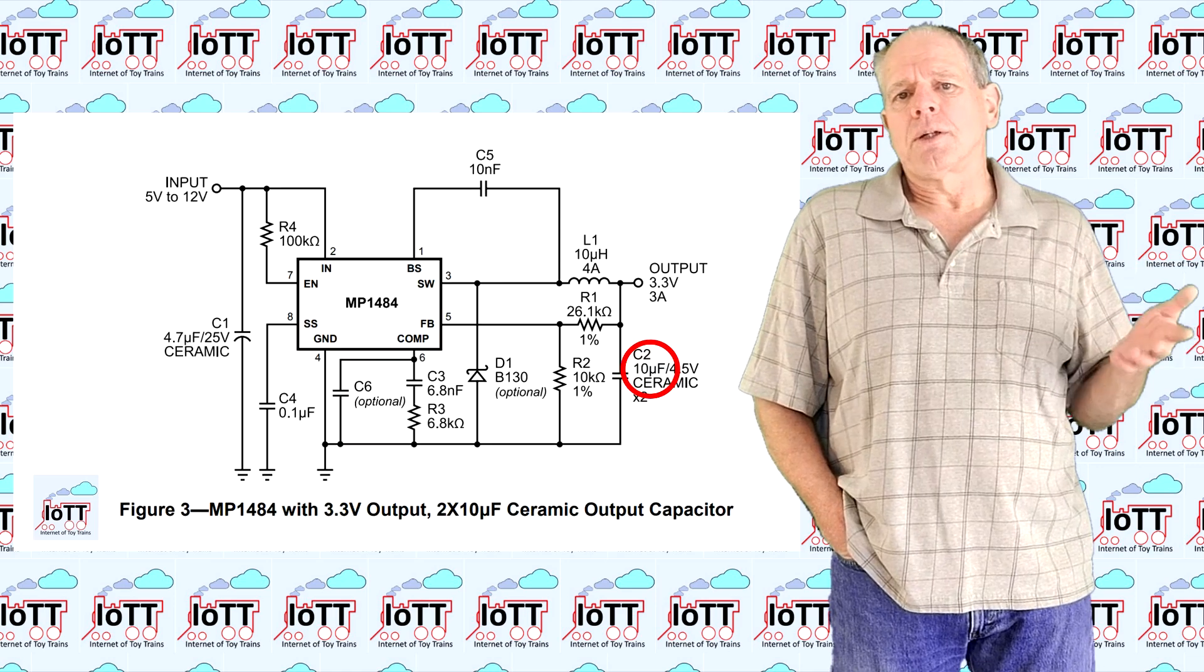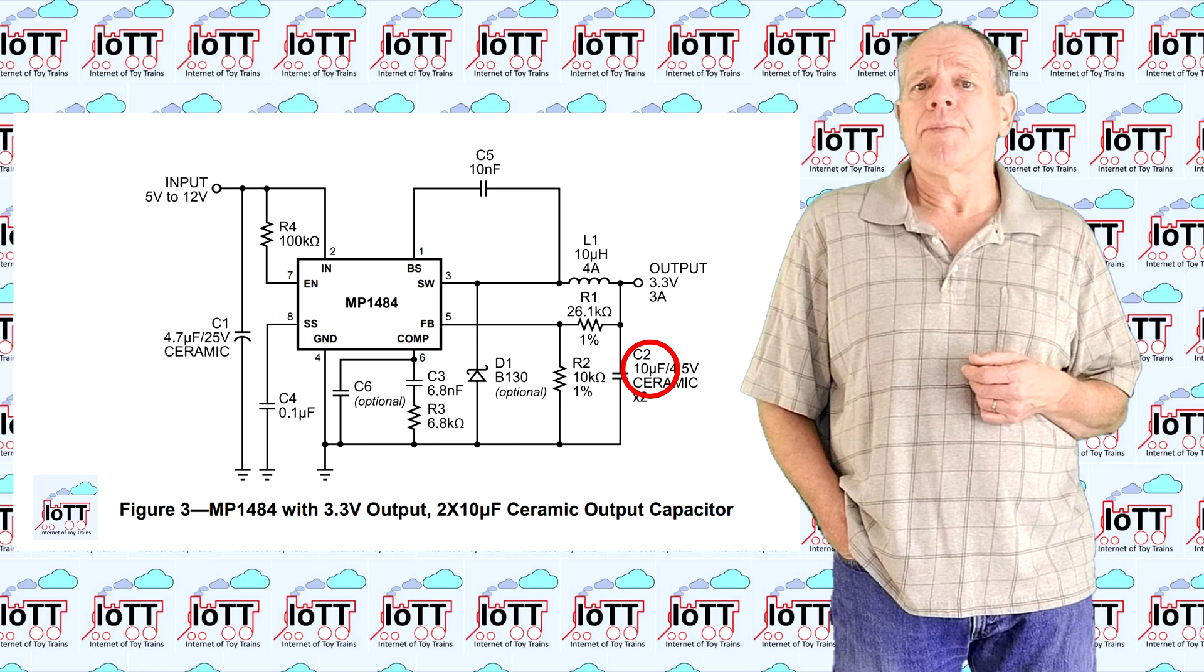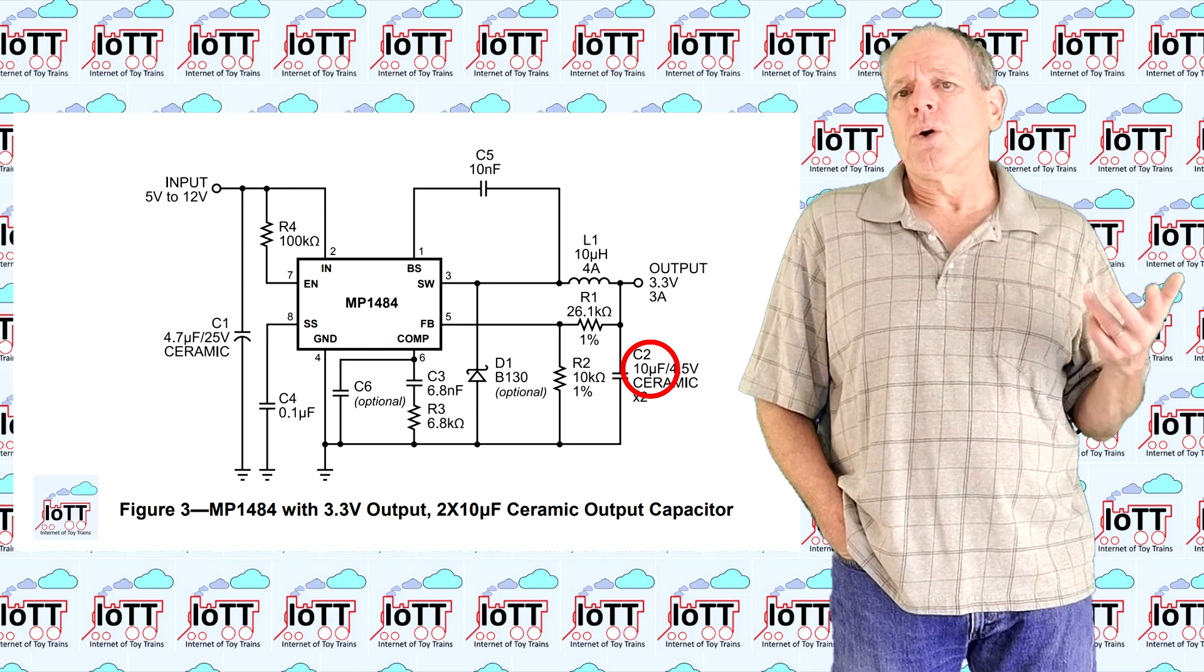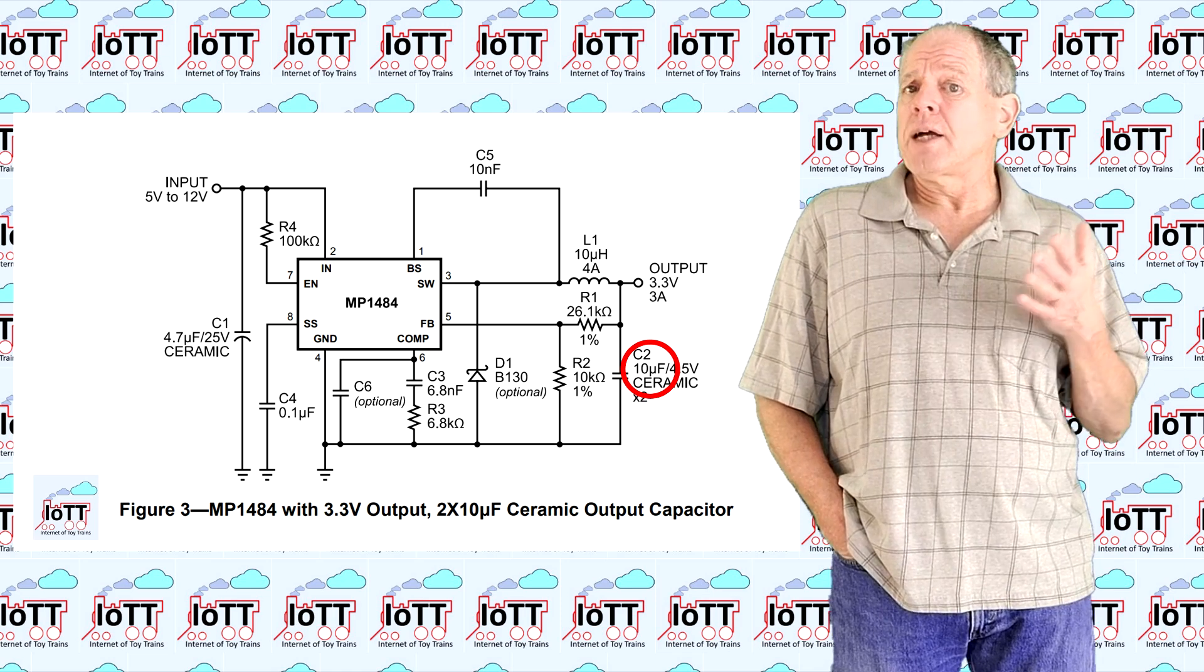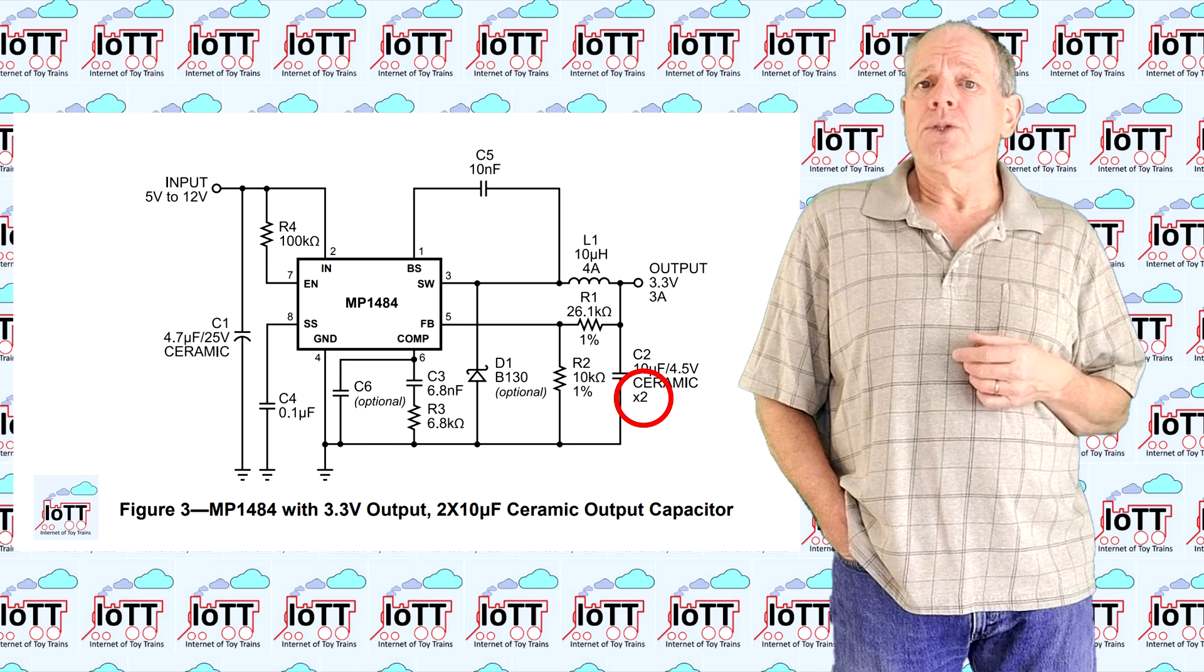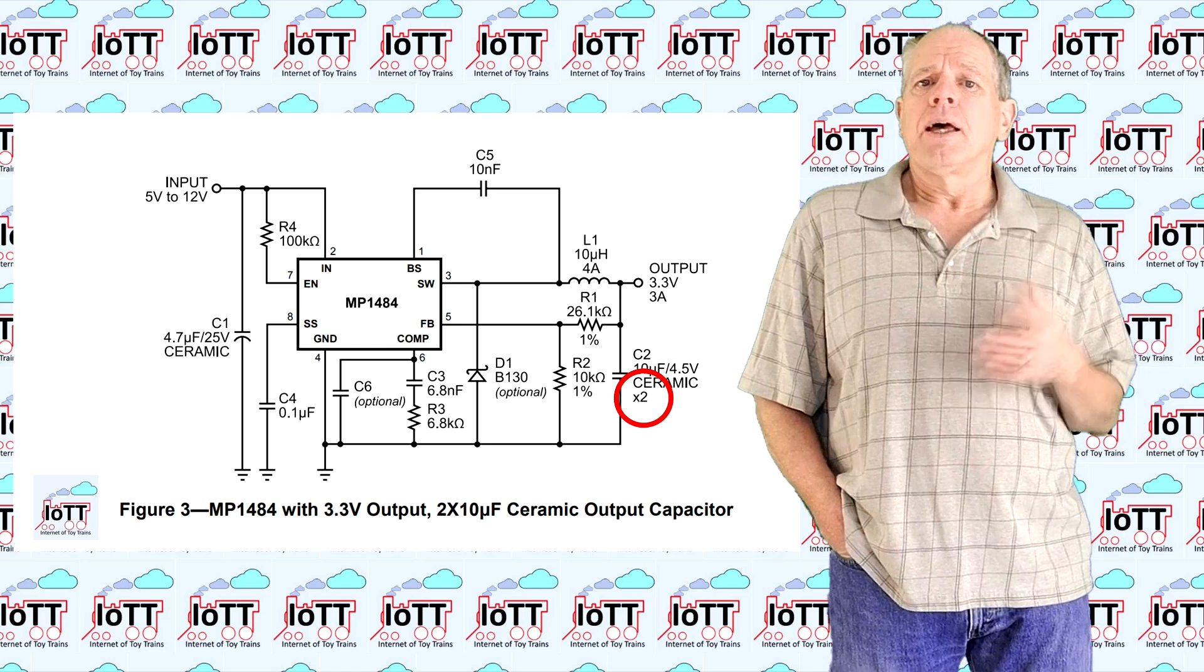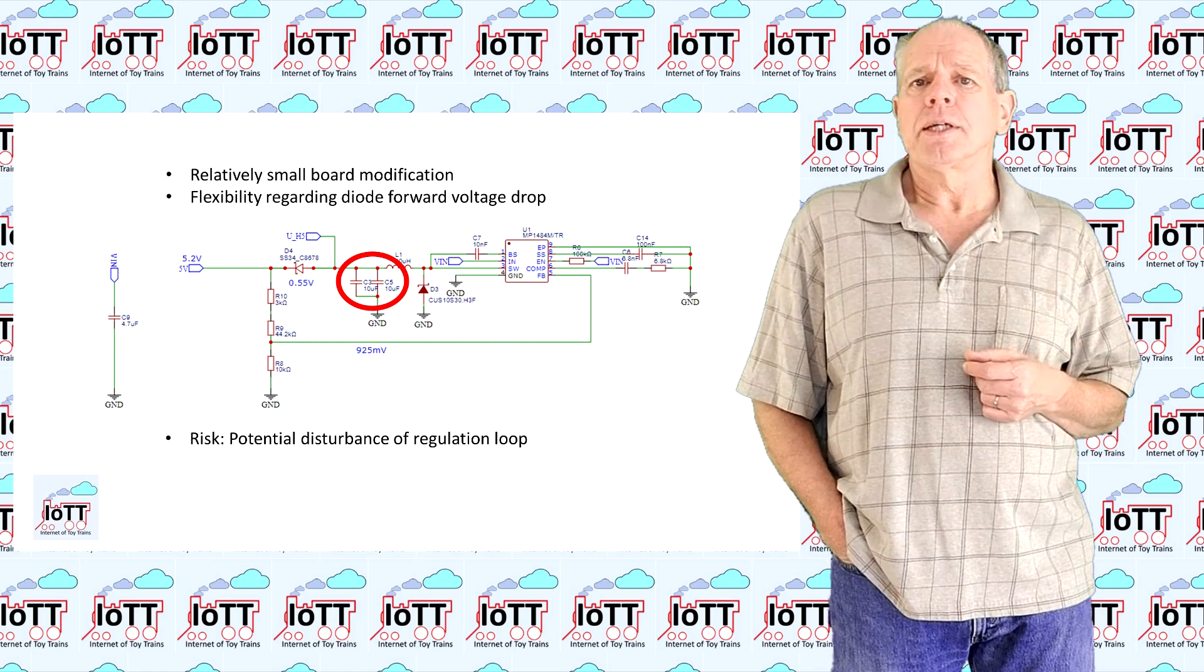So I went back to study the datasheet and indeed found an error in my design. The reference design suggested a 10uF output capacitor next to the coil to stabilize the output voltage. That's what I used, but what I overlooked was the x2 node next to it, so I used only 10uF compared to the 20uF the reference design really suggested. I therefore added a second capacitor and the problem was eliminated.